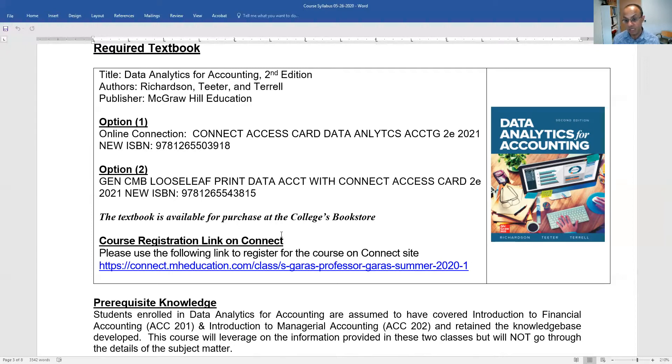But my key point is you need to get the access card from Connect, which is the publisher. So here there are two options. Either you get the ebook with access card to Connect or you get the hard copy with access card to Connect, whatever is convenient for you.